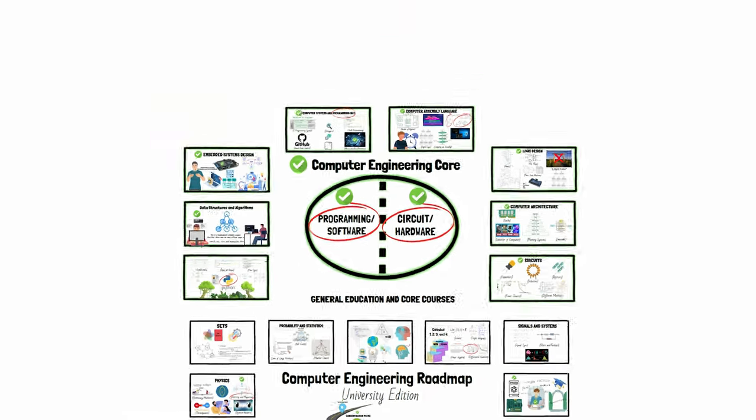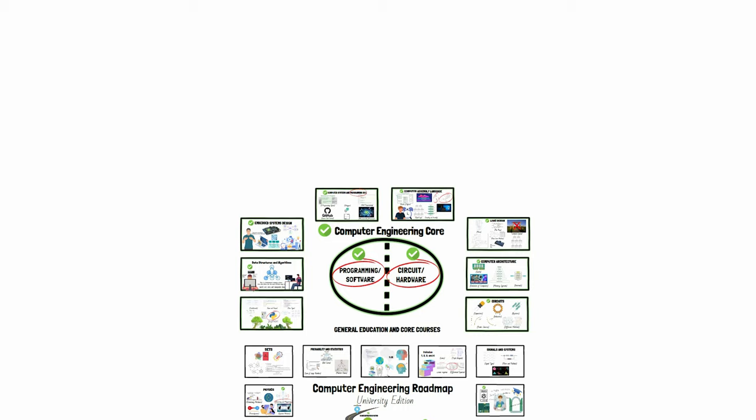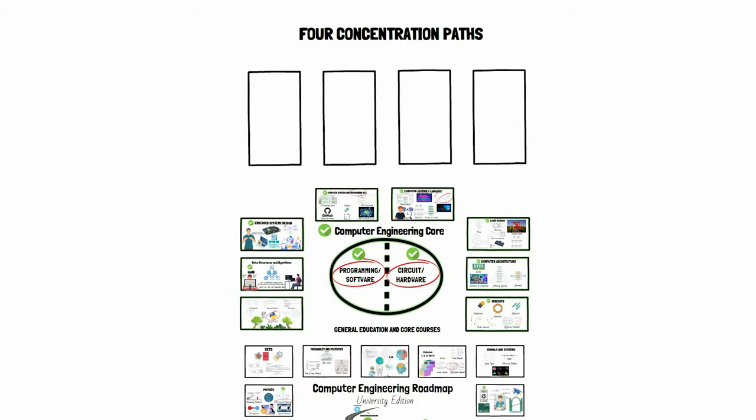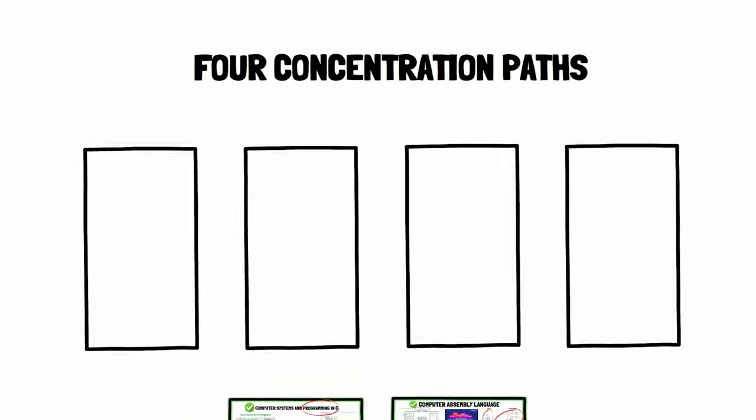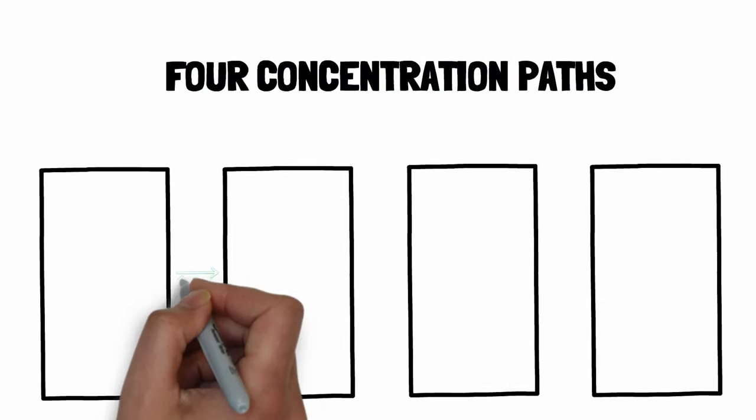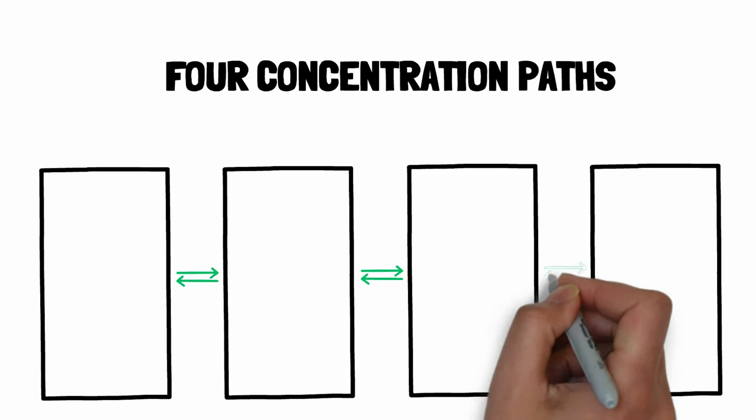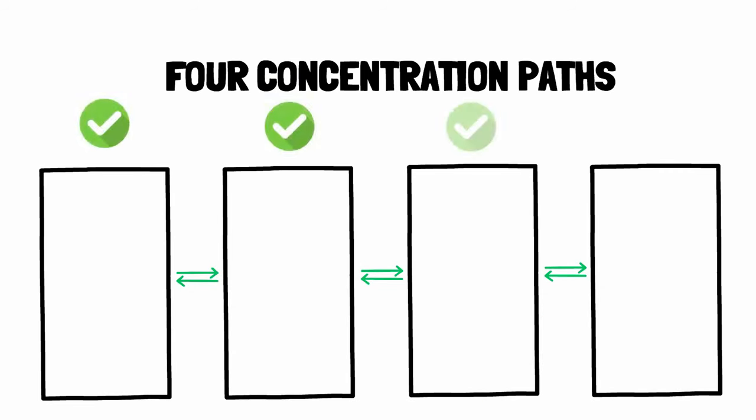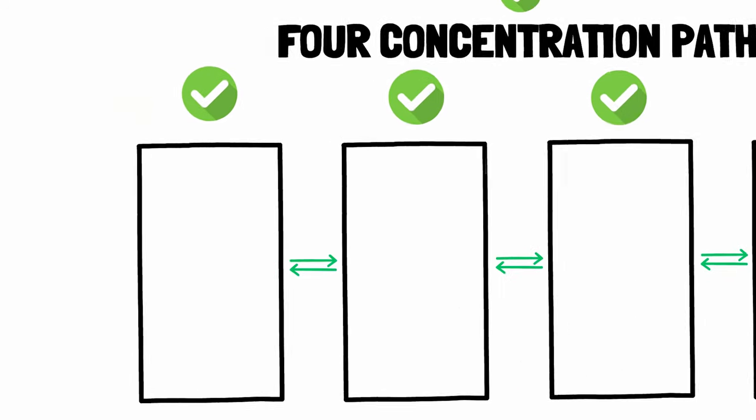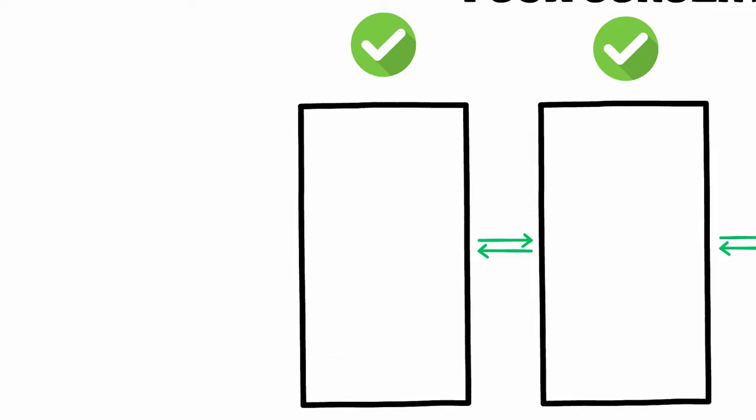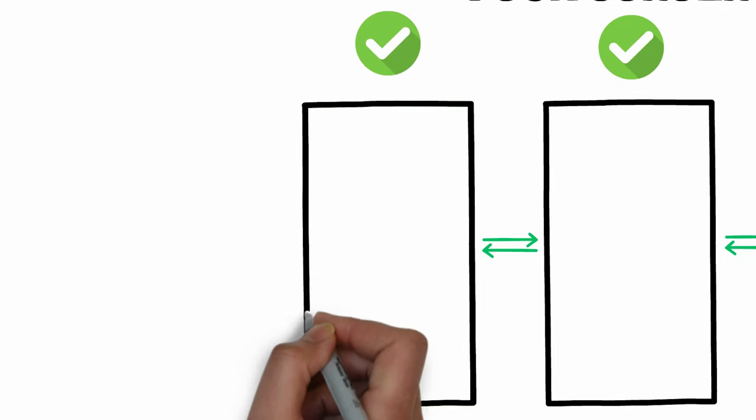But before you can continue, you must make an important choice. You have to choose one of the four concentration paths for the remainder of your degree and for your early career as a computer engineer. Remember that you can always switch concentrations and careers later down the road, but it always saves some headaches if you can get it right on the first try. Just like earlier, we'll start with the most programming-centric concentration and then make our way over to the hardware side of things.